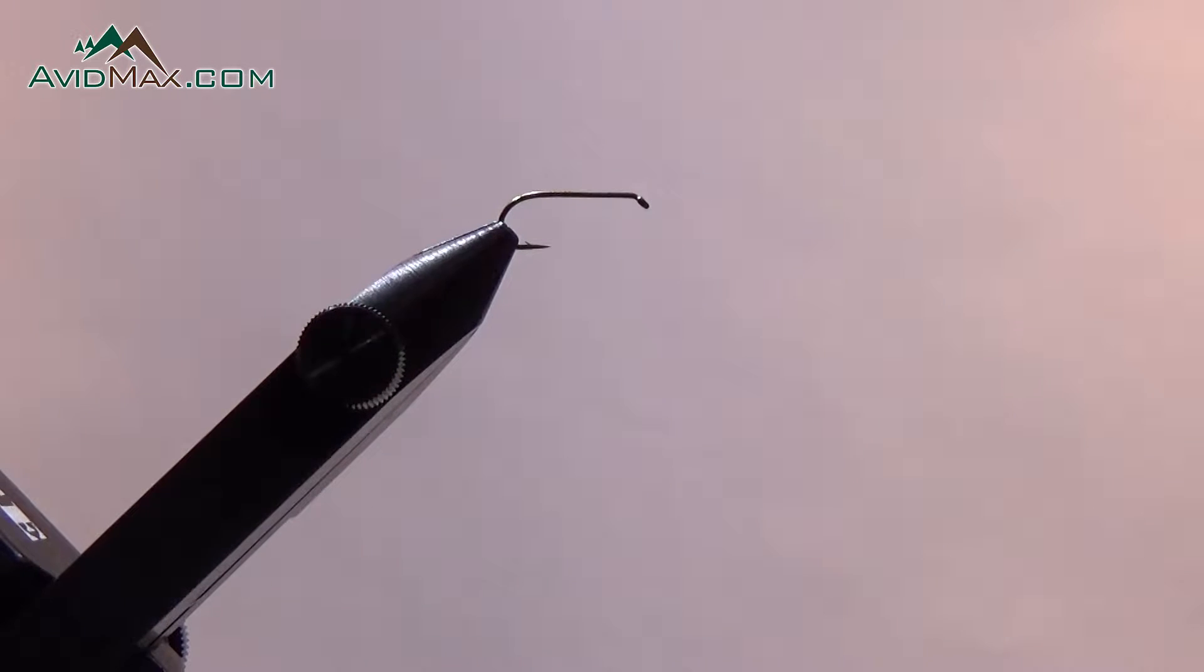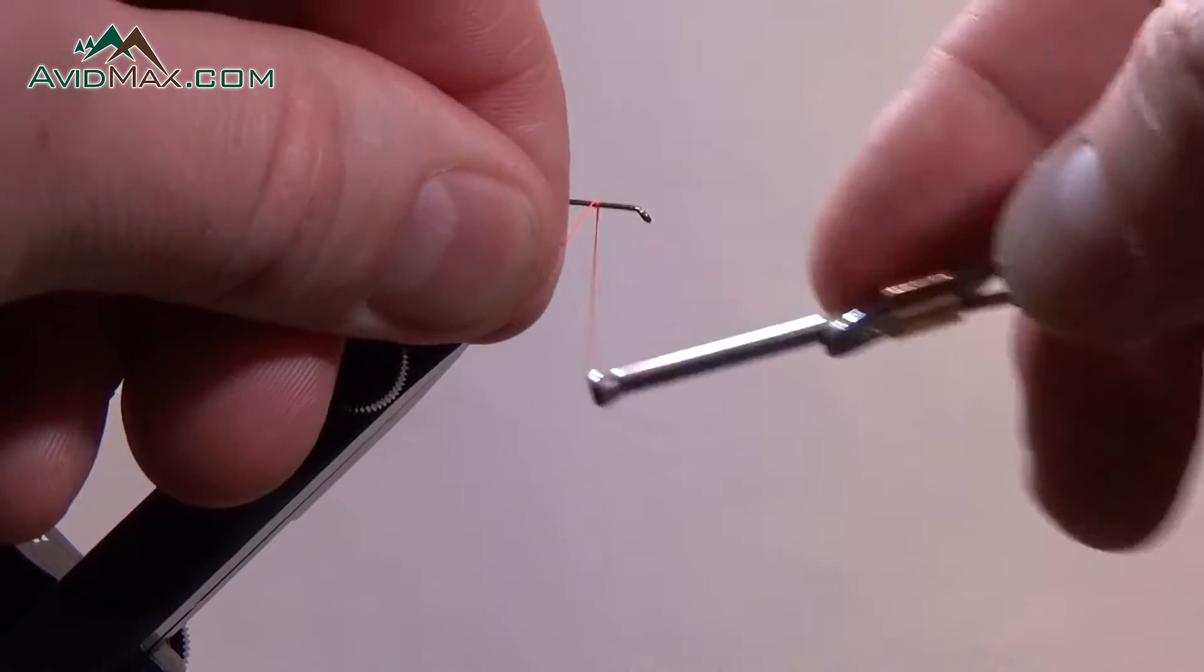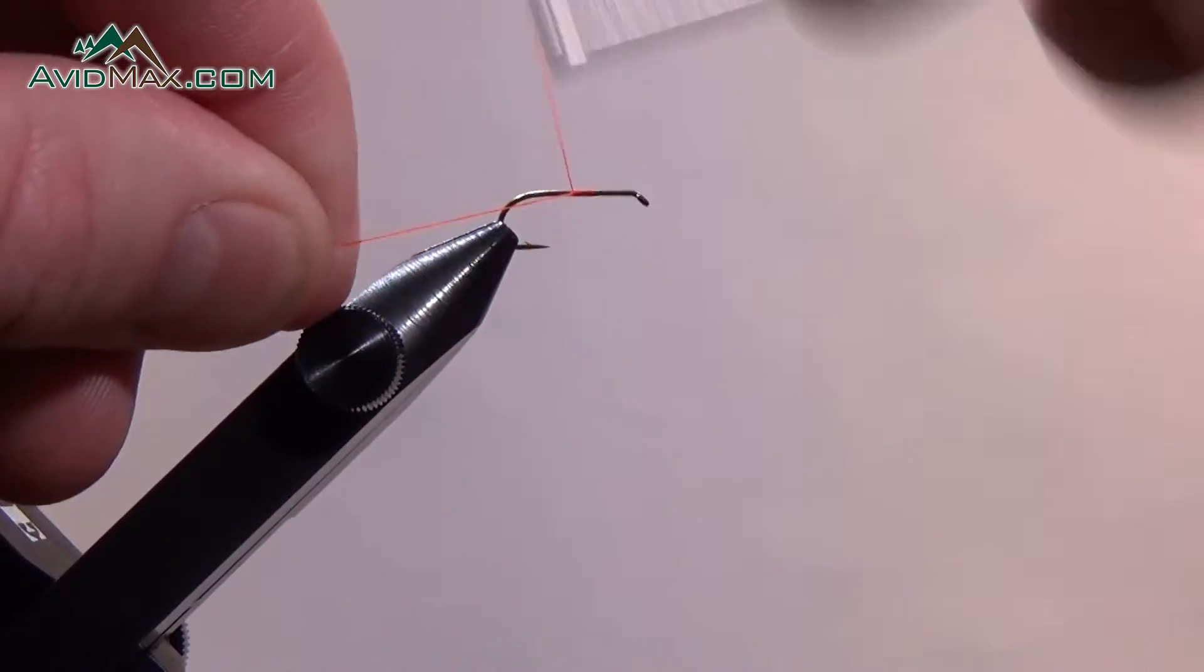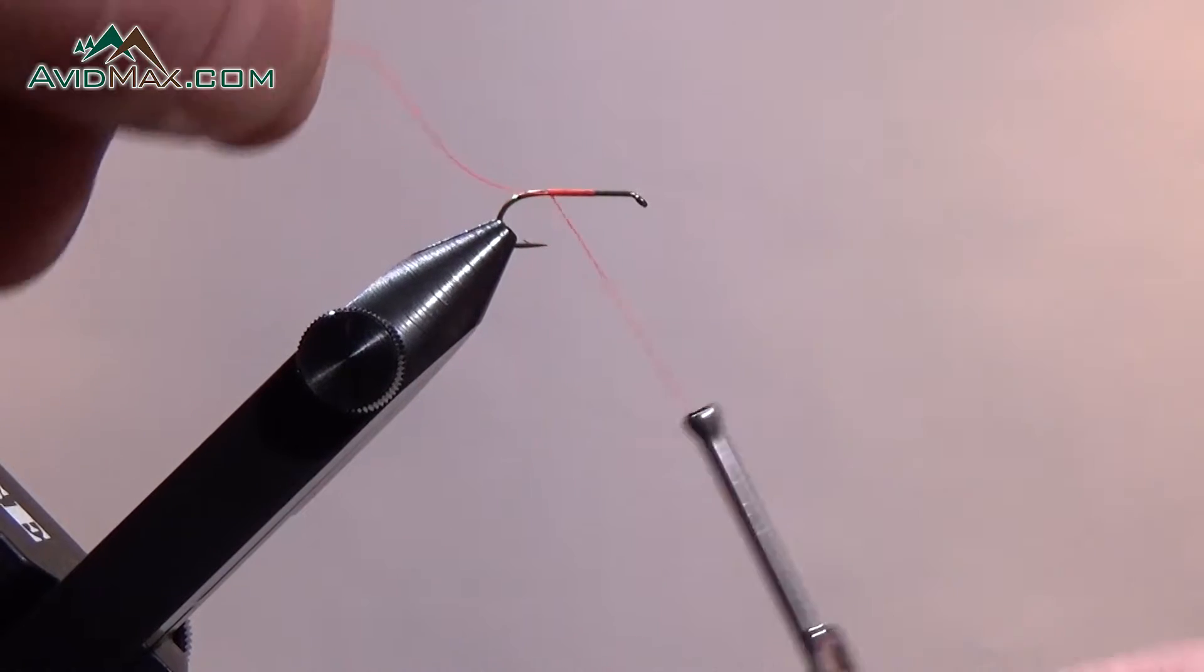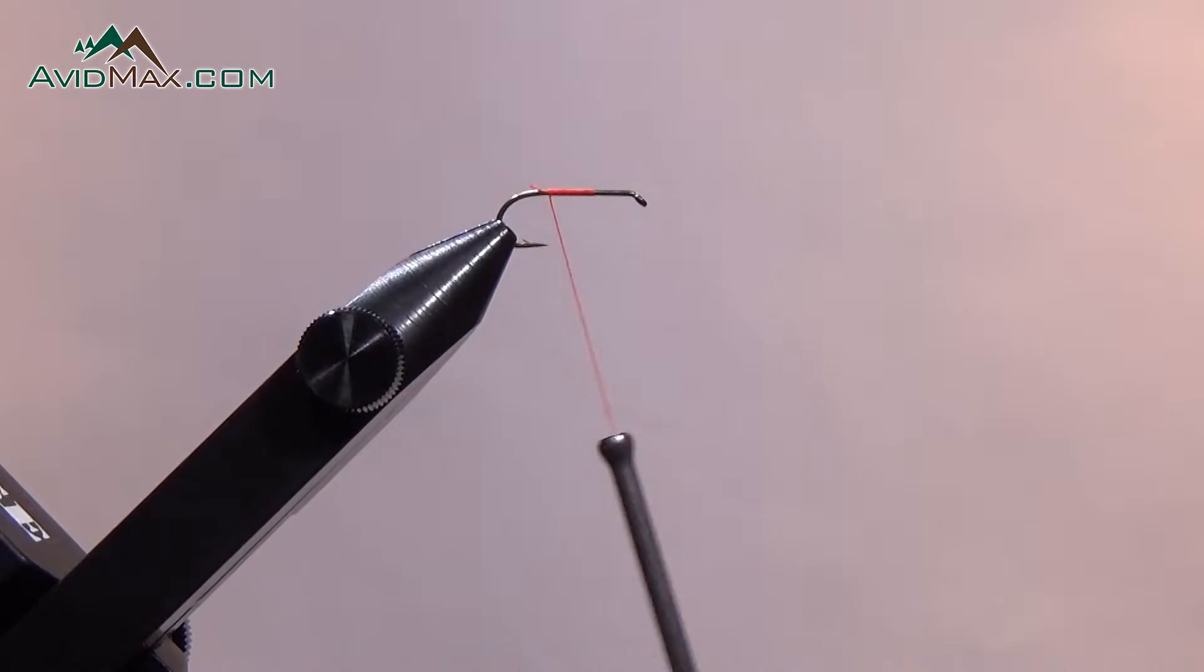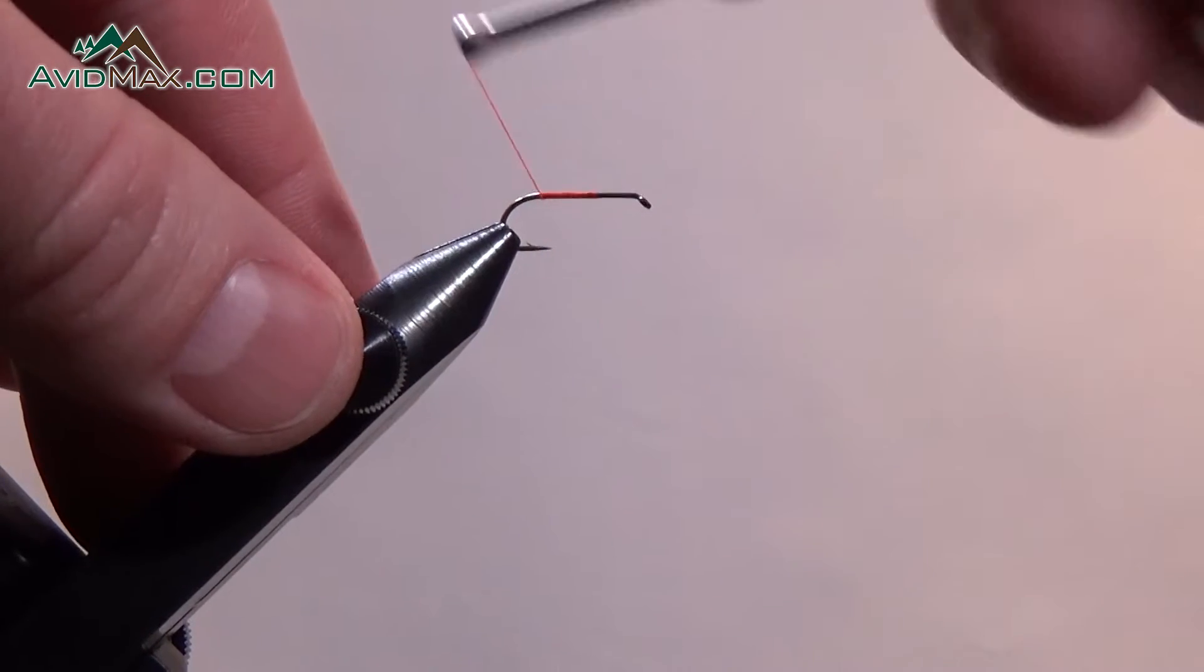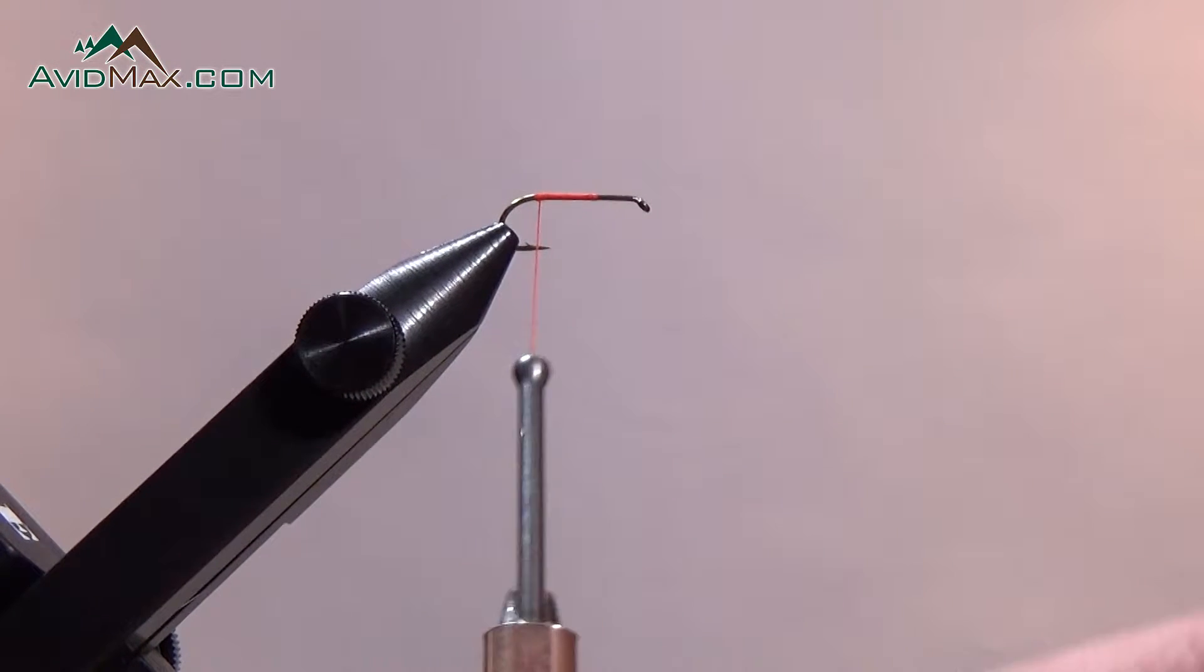We are going to start that thread with a jam knot on our hook. I'm going to get that thread almost all the way back to the bend, turn my tag end. We'll go back just a little bit more, and then I'll bring my thread in front of the hook point.